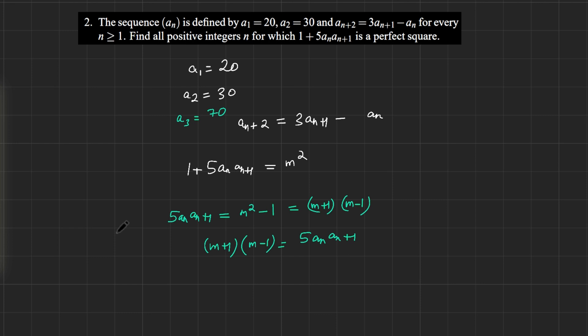And being multiples of 10, they're obviously even. So aₙ is always even, aₙ₊₁ is always even, 5 times this is always even, even plus 1 is always odd. So m is odd. m is actually a number like 2k plus 1. So I can replace that, and I can say that this would be, factoring out, that would be 4 times k times (k+1) equals 5aₙaₙ₊₁.